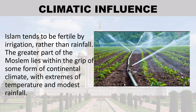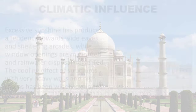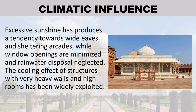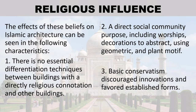Climatic influence: Islam tends to be fertile by irrigation rather than rainfall. The greater part of the Muslim world lies within the grip of some form of continental climate, with extremes of temperature, modest rainfall, and excessive sunshine. This has produced a tendency towards wide eaves and sheltering arcades, while window openings are minimized and rainwater disposal is neglected. The cooling effect of structures with very heavy walls and high rooms has been widely exploited.